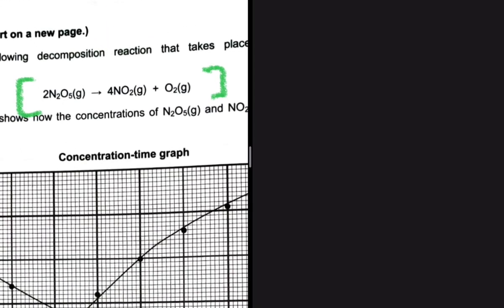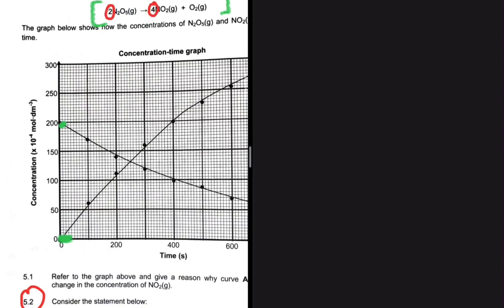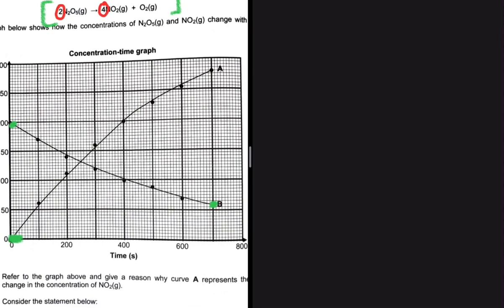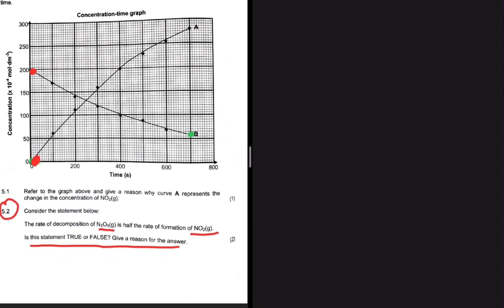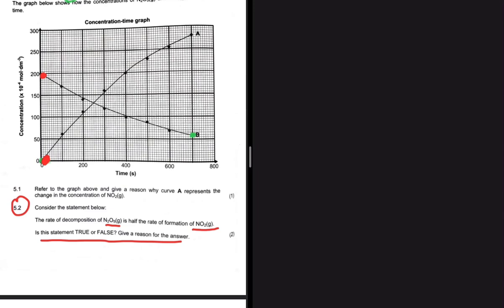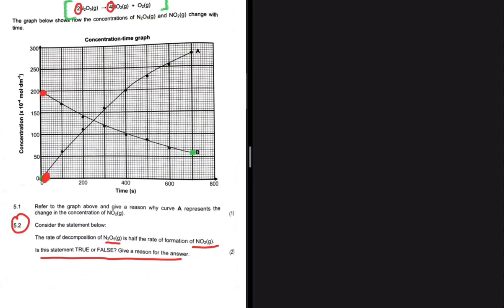Looking at the equation, NO₂ is one of our products. The concentration of a product should start at zero, and this is exactly what we see for curve A — its concentration starts at zero and goes up. For the reactant, concentration starts at 200 mol·dm⁻³ and goes down. That is why curve A represents NO₂.